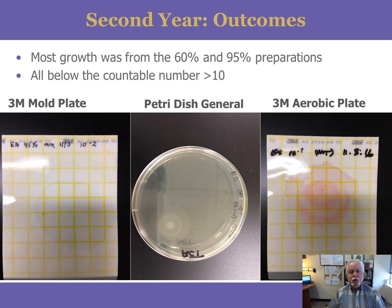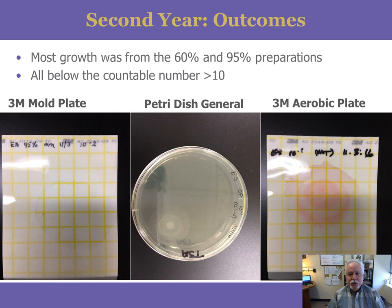These are some of the results. Most of the growth came from the 60% and 95% preparations, but all were below the countable number of 10 at a certain dilution rate. On the left is the mold plate, the petri dish, and the aerobic plate. These are at 10⁻¹, 10⁻¹, and 10⁻² dilutions — so we would report those as zero.